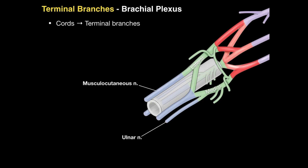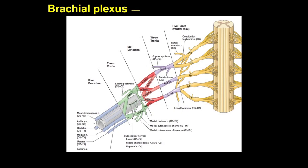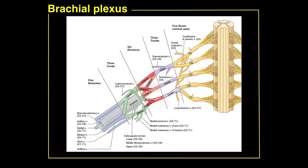Both the lateral and medial cords give rise to the median nerve, which innervates many forearm flexors, the thenar muscles, and provides sensation to the radial part of the hand. The posterior cord bifurcates into the axillary nerve — innervating the deltoid and teres minor, with sensation to the lateral shoulder — and the radial nerve, which innervates the triceps and all forearm extensor muscles, with sensation along the back of the arm, forearm, and hand. And that is the brachial plexus in a nutshell.